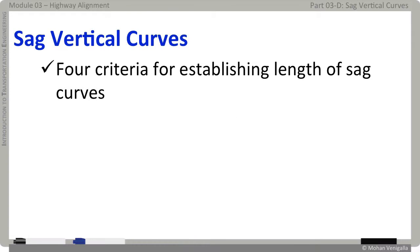When it comes to sag curves, there are additional considerations in design. We have seen stopping sight distance, passing and decision sight distances. Now enter HSD — headlight sight distance — which determines the design of sag curves.